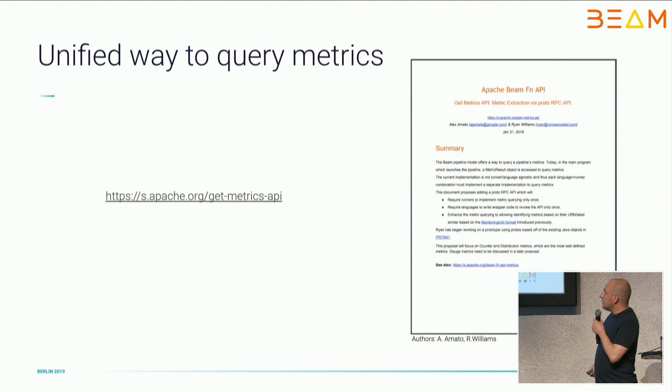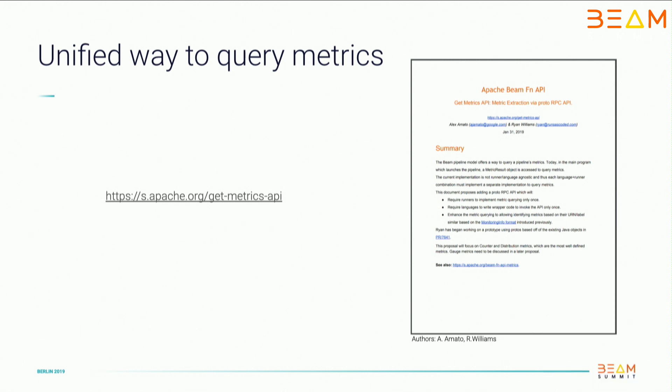Lastly, I'd like to mention this proposal by Alex and Ryan. Its goal is to define a unified way to query metrics, avoiding the duplication I mentioned. The idea is to have a common interface for metrics defined in protocol buffer files and RPC methods that can be simply wrapped on the SDK side, with the actual querying mechanisms implemented on the runner side — practically avoiding all duplication and divergence between those APIs.